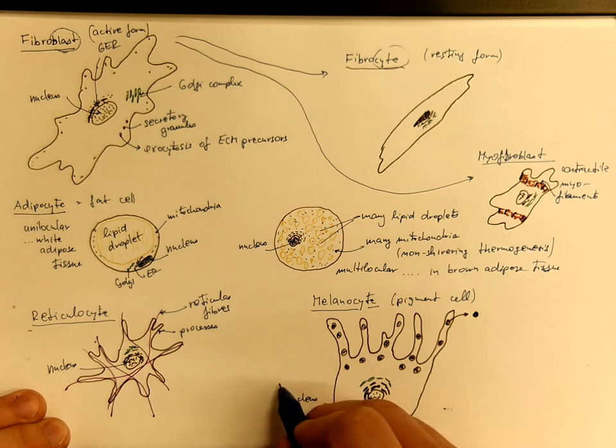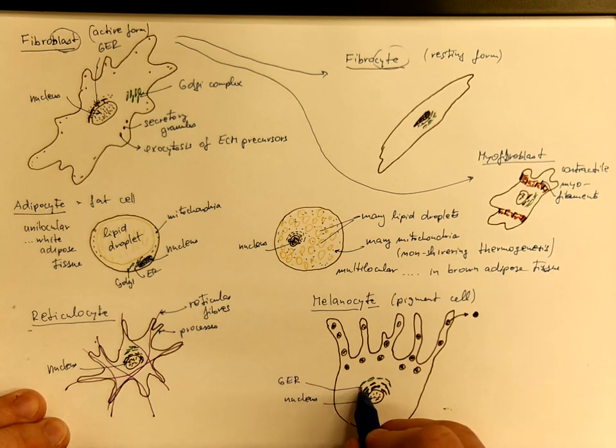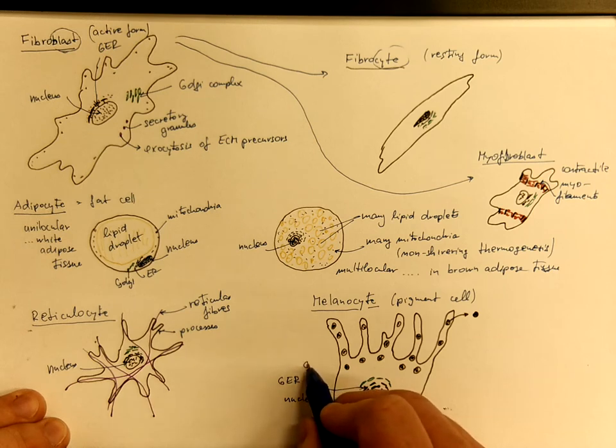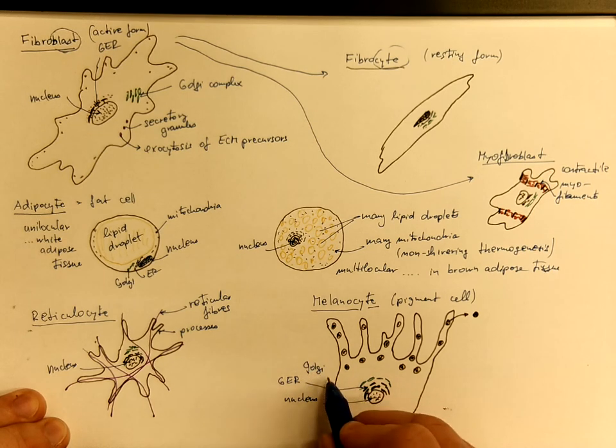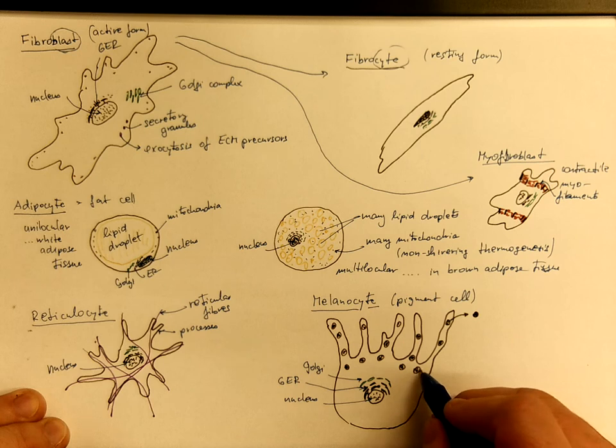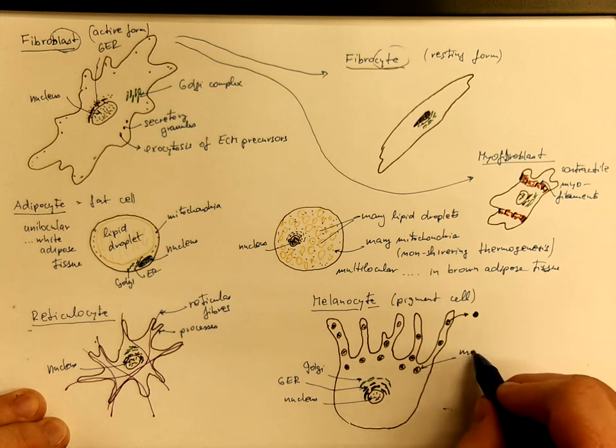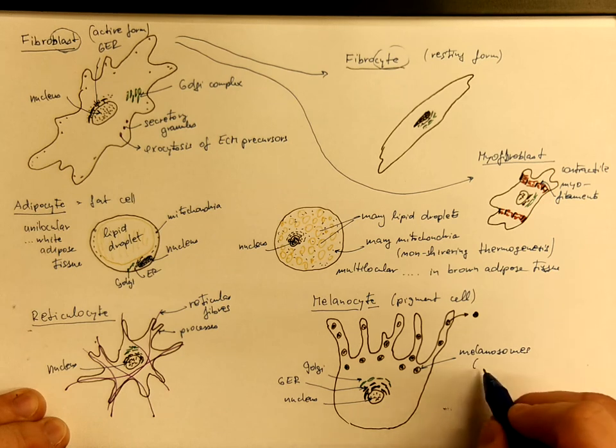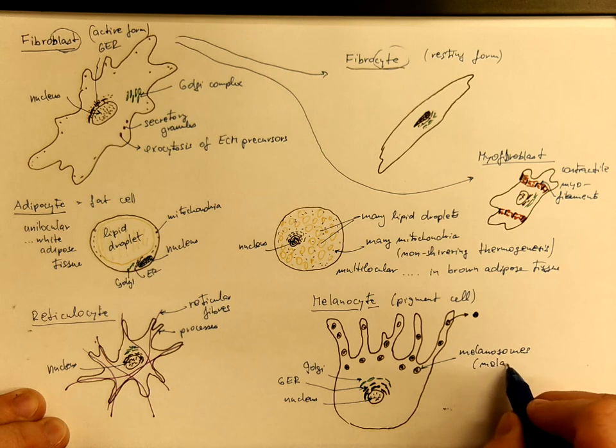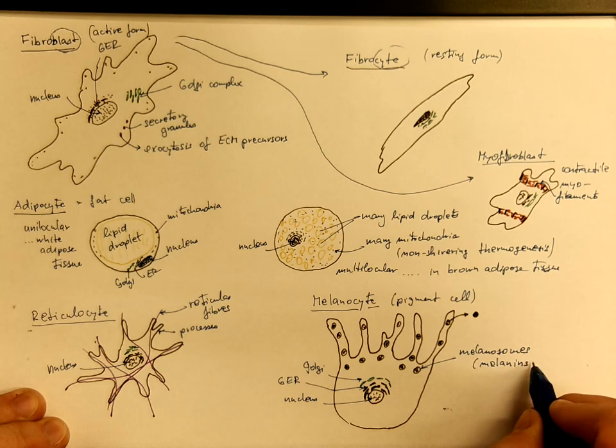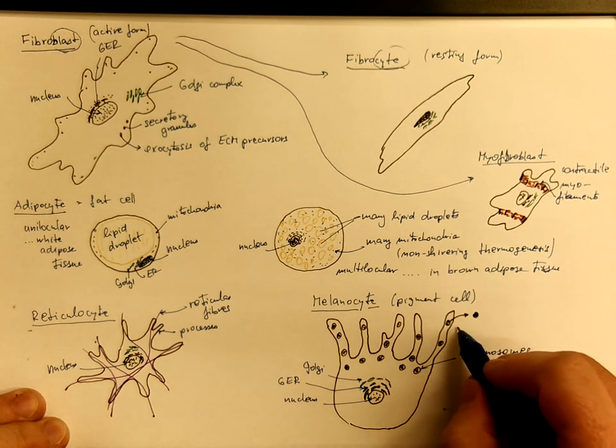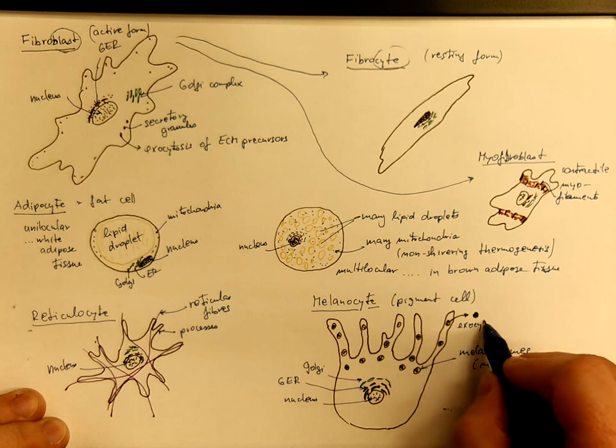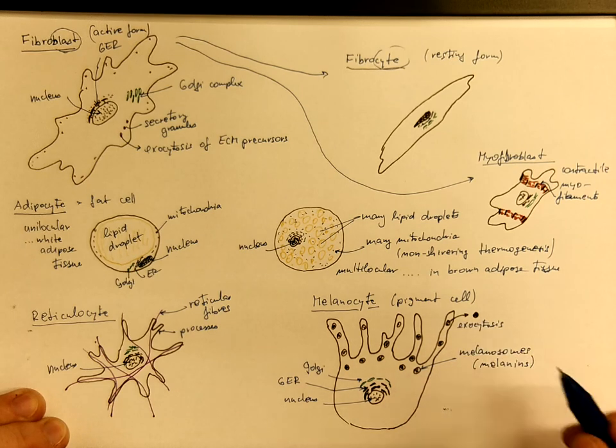So we have the nucleus, the rough or granular endoplasmic reticulum, the Golgi complex, and the melanosomes containing a variety of pigments called melanins, which undergo exocytosis into the tissues.